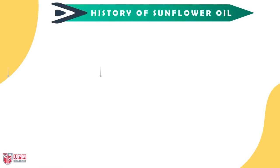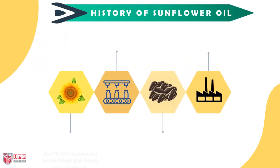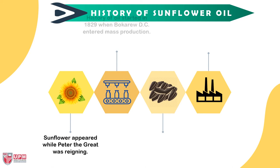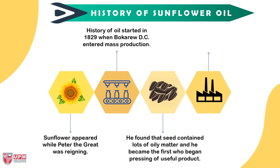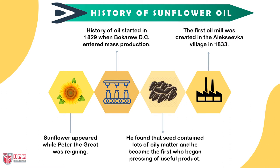The history of sunflower oil begins when sunflower appeared while Peter the Great was ruling. The history of oil started in 1829 when Bokaryov entered mass production — he found that the seed contains lots of oily matter and became the first to begin pressing of a useful product. The first oil mill was created in the Alekseyevka village in 1833.